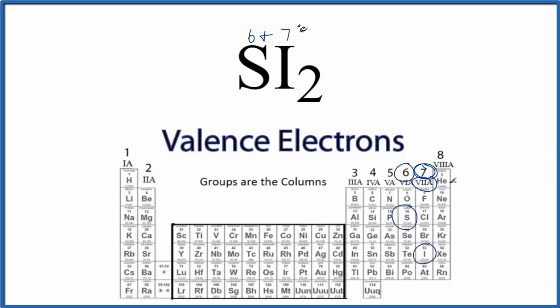But we have 2 of them, multiply that by 2, so 6 plus 14, 20 total valence electrons for this SI2 Lewis structure.